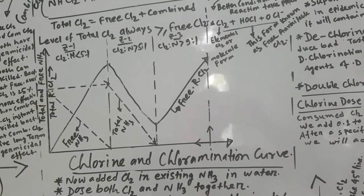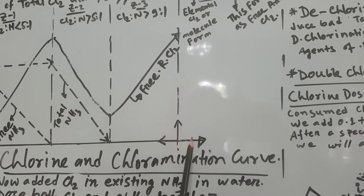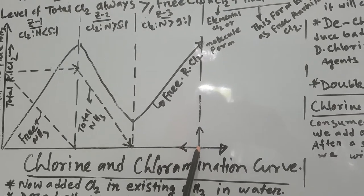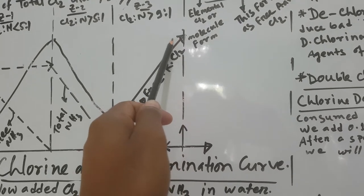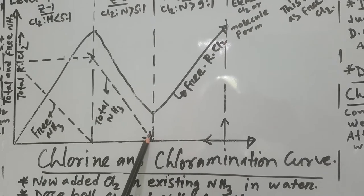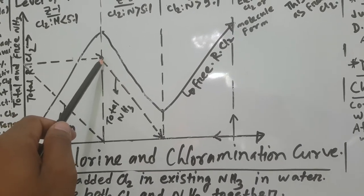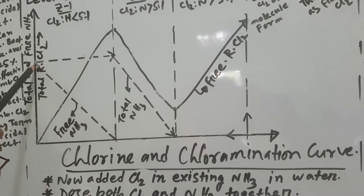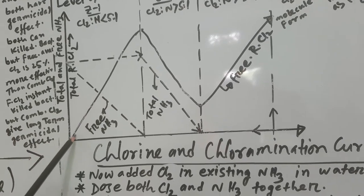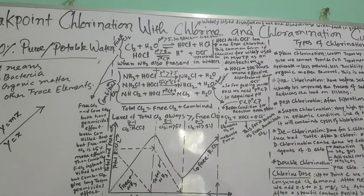Now I will show the reverse case: starting with chlorinated water and adding ammonia. When ammonia is added, the chlorine is initially high and gradually decreases. Total ammonia gradually rises. After the breakpoint, the residual chlorine curve starts to build again. At the endpoint, chlorine reaches zero while total ammonia is at its maximum.